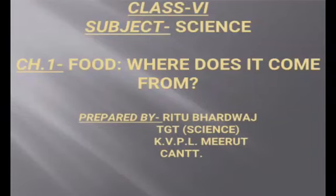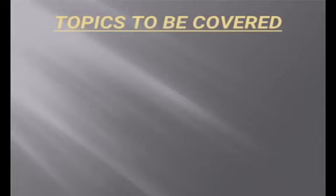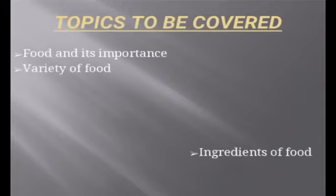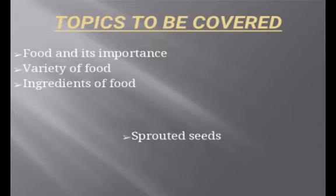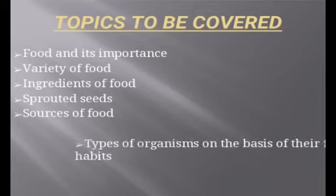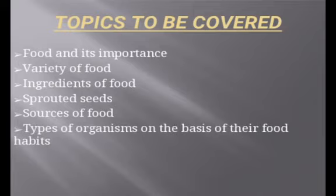Students, we are going to study Chapter 1 of Class 6 Science: Food, Where Does It Come From? The topics to be covered in this chapter are Food and Its Importance, Variety of Food, Ingredients of Food, Sprouted Seeds, Sources of Food, and Types of Organisms on the Basis of Their Food Habits.